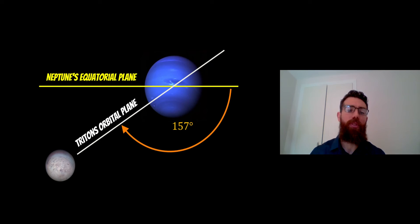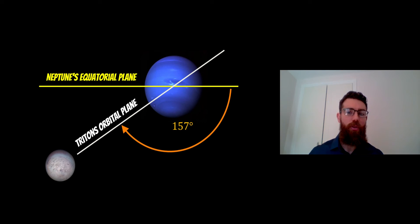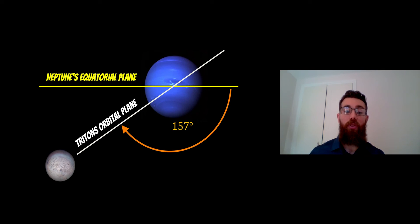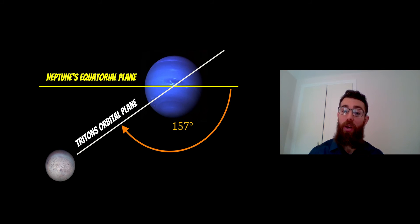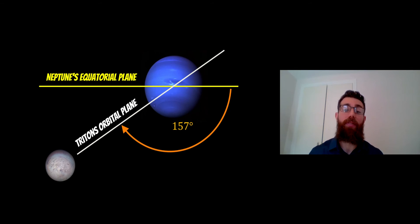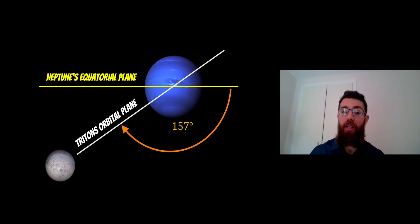It's not just that Triton orbits in the opposite direction — it also has a very high inclination angle. If you look at the equatorial plane of Neptune and then look at the orbital plane of Triton, it is actually inclined by 157 degrees. So it is on a very inclined orbit compared to a regular moon. Irregular moons can have quite a range of inclinations; they can be anywhere around the planet, oriented in any direction — they are not restricted.